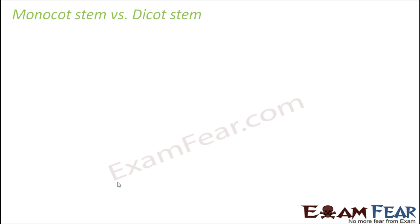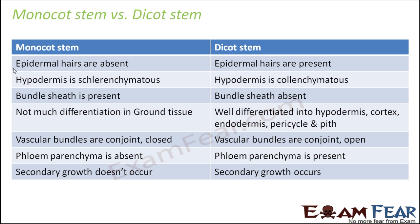Now that we have studied both dicot stem and monocot stem, let us have a quick comparison. In a monocot stem, epidermal hairs are absent — you do not have hair-like structures on the epidermis — whereas they are present in dicot stem. Hypodermis is sclerenchymatous in monocot stem, whereas it is collenchymatous in dicot stem. Bundle sheath is present in monocot stem — the vascular bundles are scattered and each bundle is surrounded by sclerenchymatous tissue called bundle sheath — but bundle sheath is not present in dicot stem. In monocot stem, there is not much differentiation in ground tissue; the entire ground tissue is made up of parenchyma cells with no separate cortex or endodermis.